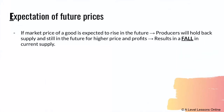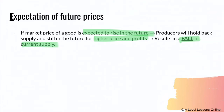Next, expectation of future prices. Basically, if the market price of a good is expected to rise in the future, producers are willing to hold back supply because they want to sell in the future at higher prices and profits — this can result in a fall in the current supply. So if producers feel that the price of a good will go up in the future, they could actually hold back current supply and increase their quantity supplied next time.